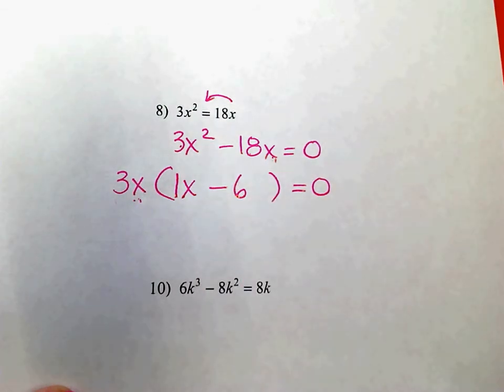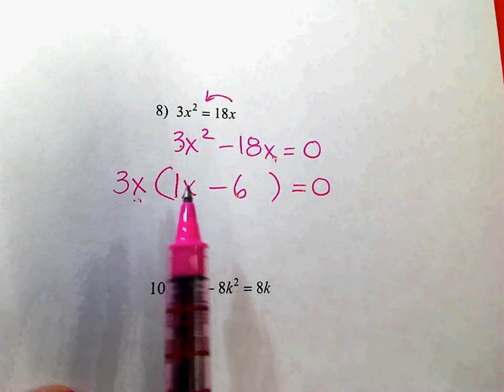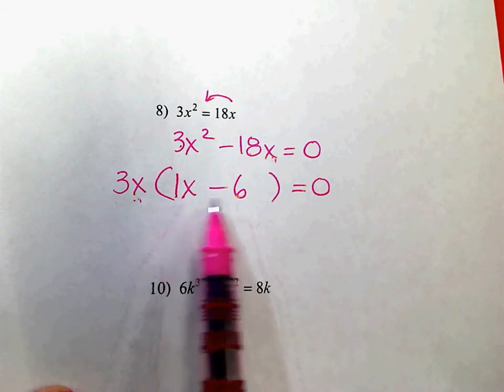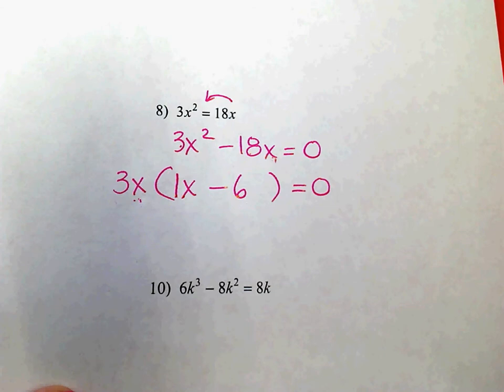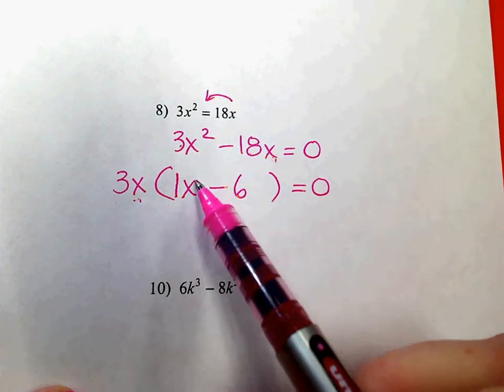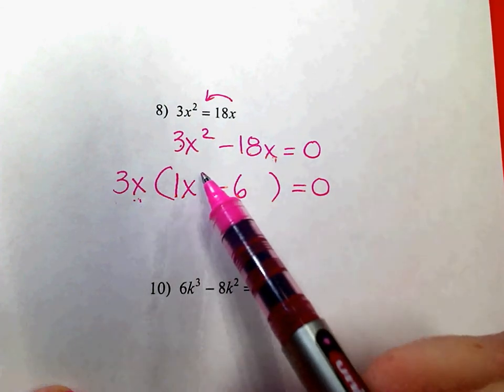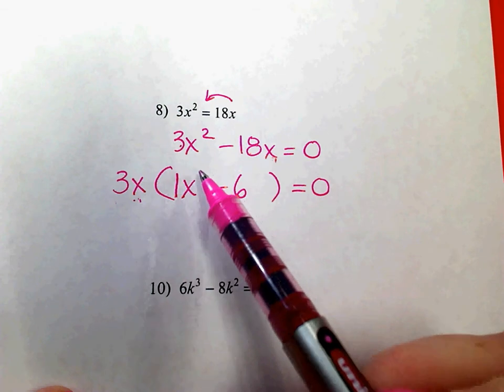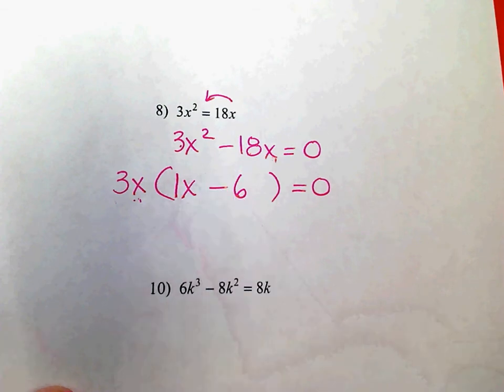So here, I'm seeing a lot of you try to put this into two sets of parentheses. It cannot go into two sets of parentheses if this x doesn't have an even exponent. x to the second, x to the fourth, x to the sixth. If it's x to the first,